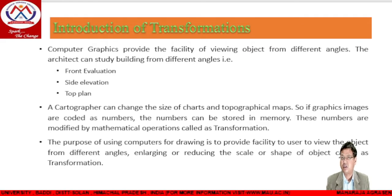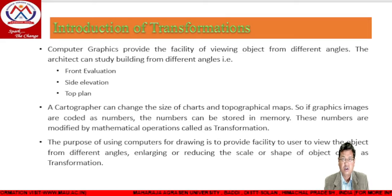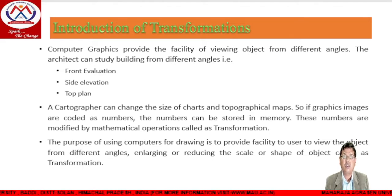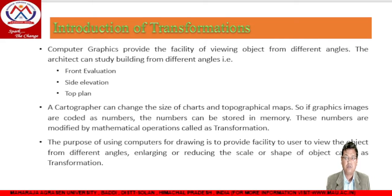First, we go to the introduction to transformation. In computer graphics, it provides the facility of viewing objects from different angles. For example, an architect can study a building from different angles. Transformation means we want to change the image size of any object. The purpose of using computers for drawing is to provide the facility to view objects from different angles, enlarging or reducing the scale or shape. Transformation means we can rotate, reduce, or enlarge any object, or take its mirror reflection.